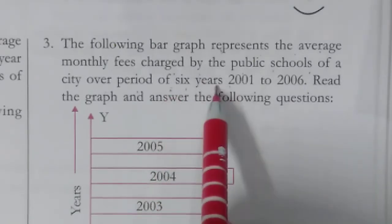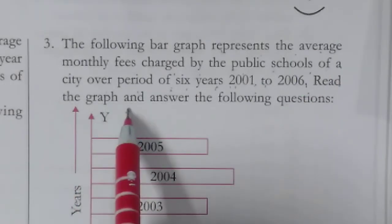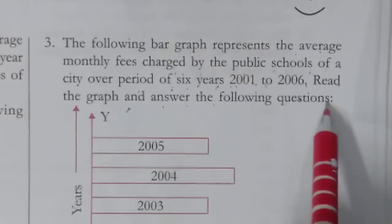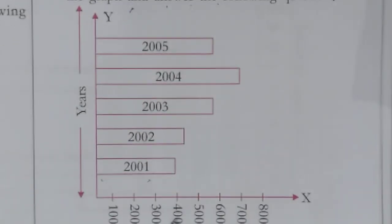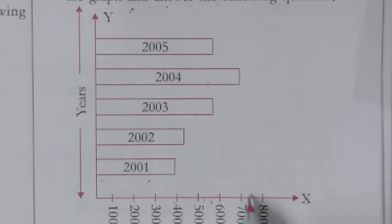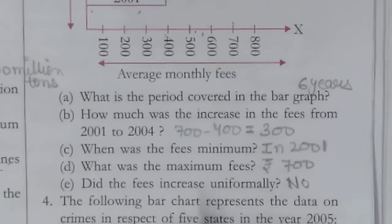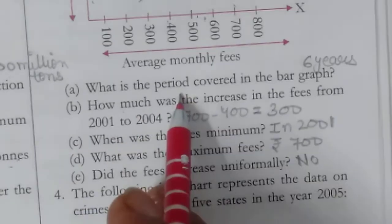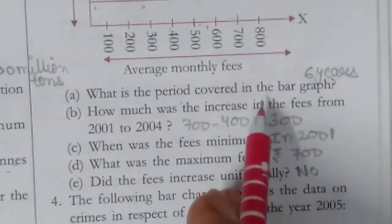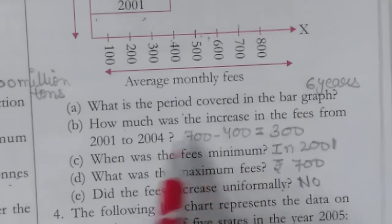Millimetres of rainfall — six years ka period, 2001 se lekar 2006 tak. Read the bar graph and answer the questions. What is the period covered in the bar graph? Six years ka period cover kiya gaya hai.